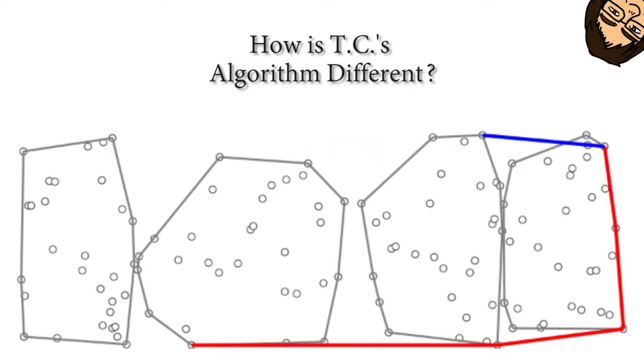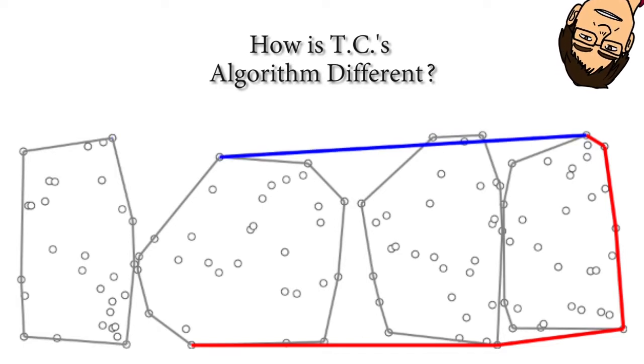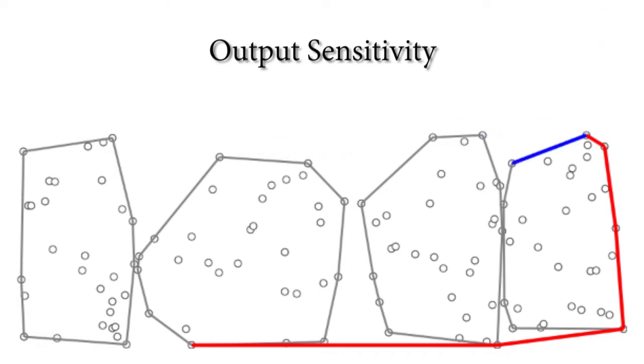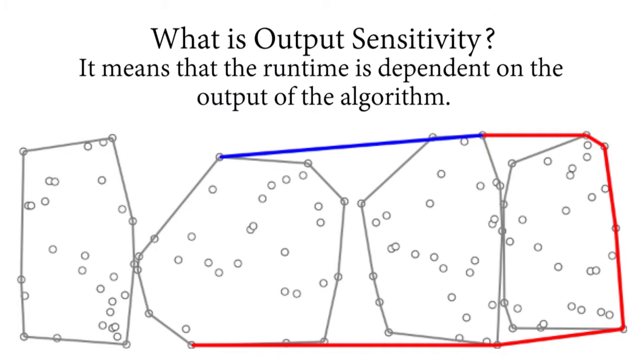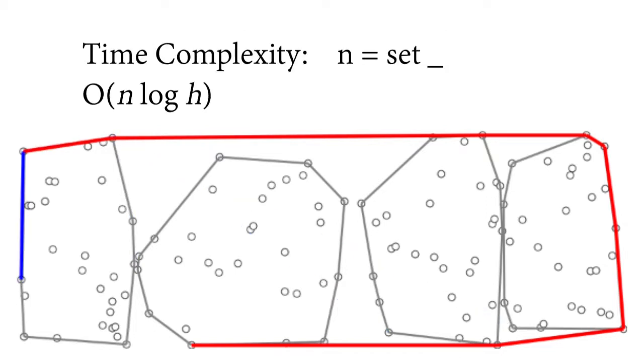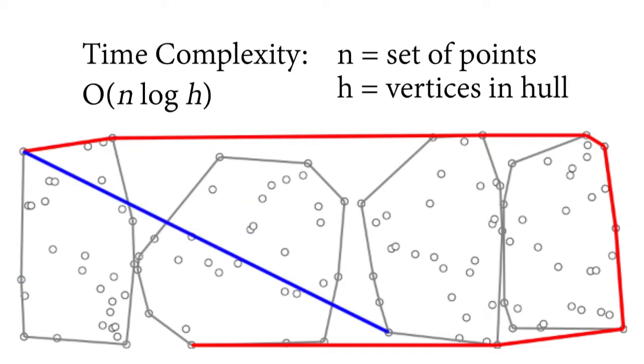So how is Timothy Chan's algorithm different? Output sensitivity. What is output sensitivity? It means that the runtime is dependent on the output of the algorithm. The time complexity is O(n log h) where n is the set of points and h is the amount of vertices in the hull.